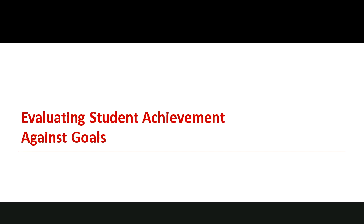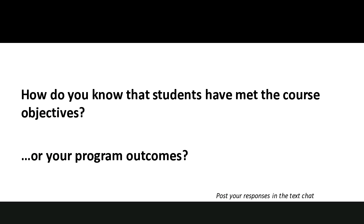Once you have your course aligned, you would grade your assessments just as normal. The beauty of this is that it is course-embedded assessment. So you do more work up front to align the course, but you don't have to do separate or secondary assessment in order to gather your data against those goals. Once you've graded it, that's when you can start pulling the broader data against student performance. Just as a quick reflection: you obviously know how students have done on an individual assignment, but how do you know that students have actually met the course objectives? And at the program level, how do you know that students graduating from your degree have met your program outcomes?